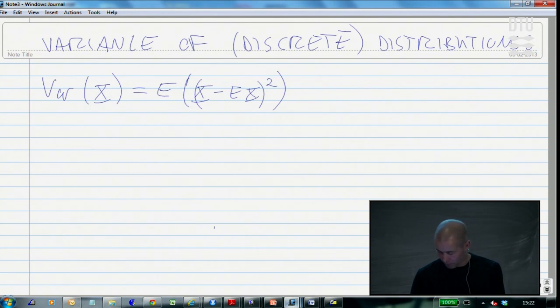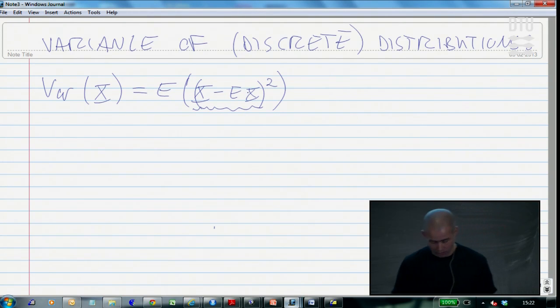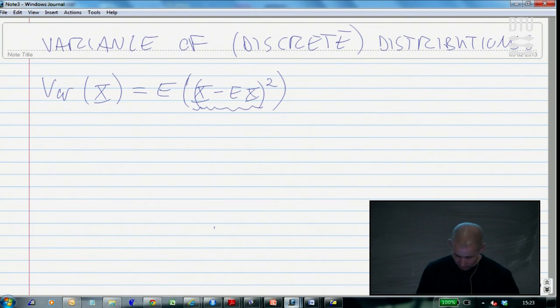Let me repeat that. It's the expected value of the square of the difference between observations themselves and the actual mean of the distribution. So it's the expected squared deviation. That's the definition of variance by abstract means.